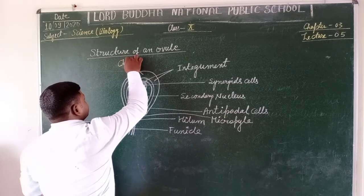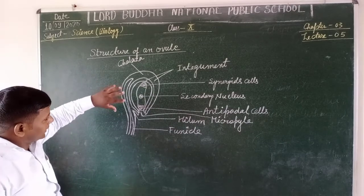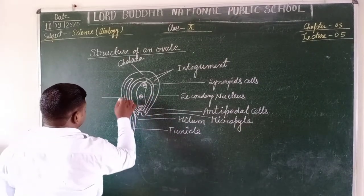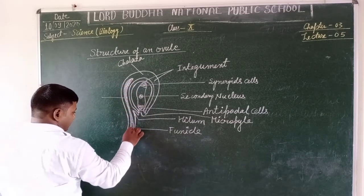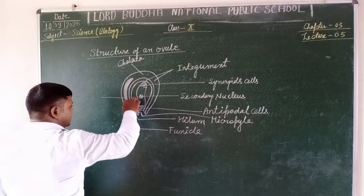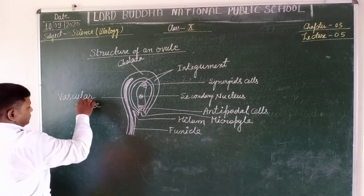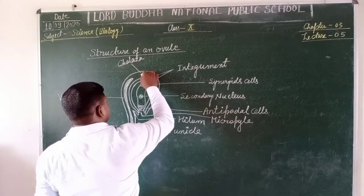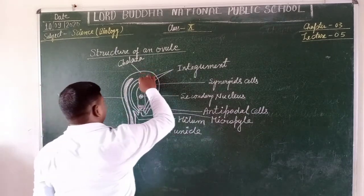This is the chalaza — the outermost covering part of the ovule — and it helps in attaching the ovule inside the ovarian walls. This is the vascular bundle through which the distribution of water and minerals takes place inside the nucellus. In between the integument and the chalaza, parenchymatous cells are present that form the endosperm layer of the ovule, called the nucellus.